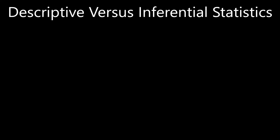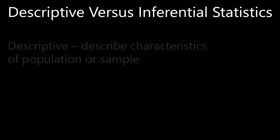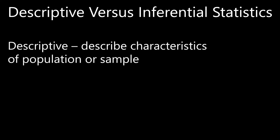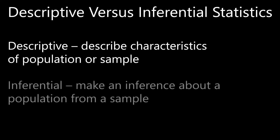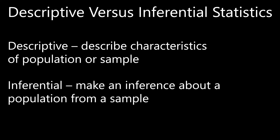Another core idea is descriptive versus inferential statistics. Descriptive statistics describe the characteristics of a population or sample. Descriptive statistics you might be familiar with include measures of central tendency, such as the mean or average. Inferential statistics is the idea where you make an inference or generalization about a population from a sample — this is the core idea of hypothesis testing in statistics.